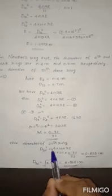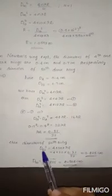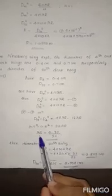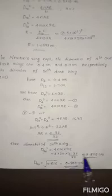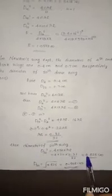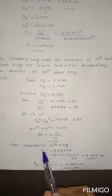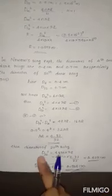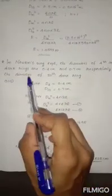Now, for the 20th dark ring: d20² = 4 × 20 × λR. Substituting the value of λR obtained earlier, we get d20² and thus d20 ≈ 0.825 cm. This is the diameter of the 20th dark ring.